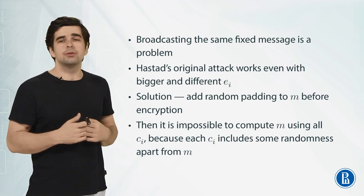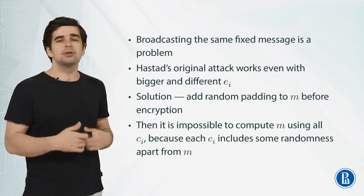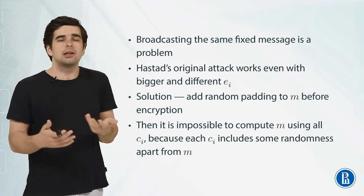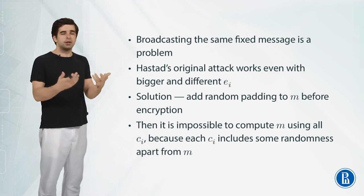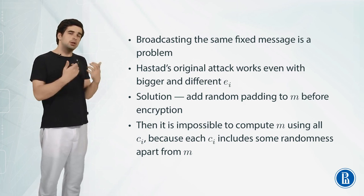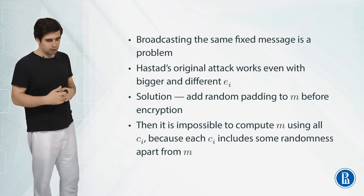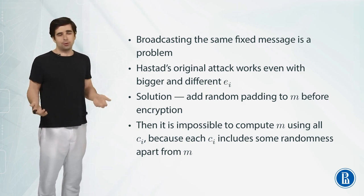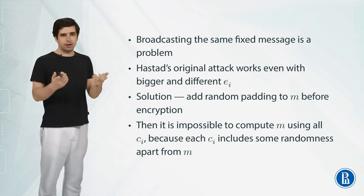Because each cᵢ includes some random part apart from m and so there cannot be any deterministic algorithm that recovers the exact m out of c₁, c₂ and c₃. So c₁, c₂ and c₃ share some common information in the form of m but they also differ by some random bits which we added to m before encryption and so we cannot actually use such kind of algorithms to recover m.